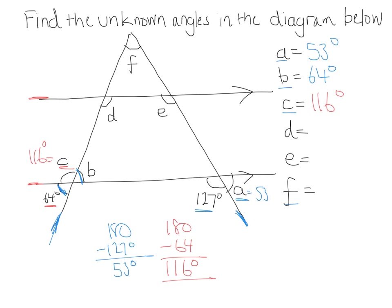Now, since C and D are alternate angles, that is, they're on the inside of a pair of parallel lines and on the opposite sides of a transversal, C would have to be equal to D. So D would be equal to 116.